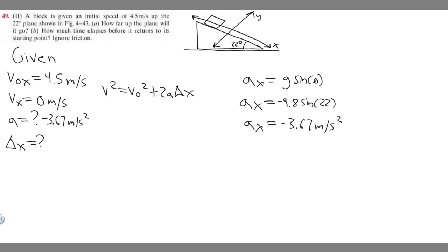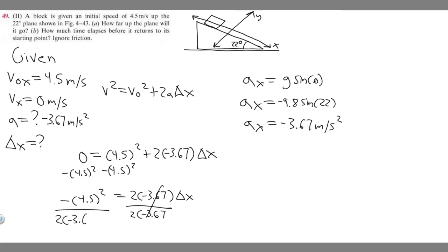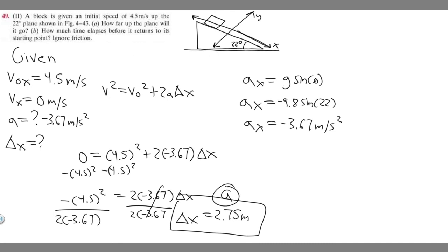Now we plug everything in. 0² = 4.5² + 2·(−3.67)·Δx. Moving 4.5 squared to the other side: −4.5² = 2·(−3.67)·Δx. Dividing both sides by 2·(−3.67), delta x equals negative 4.5 squared over 2 times negative 3.67, which gives us about 2.75 meters. So the block travels 2.75 meters up the plane — that's the answer to Part A.